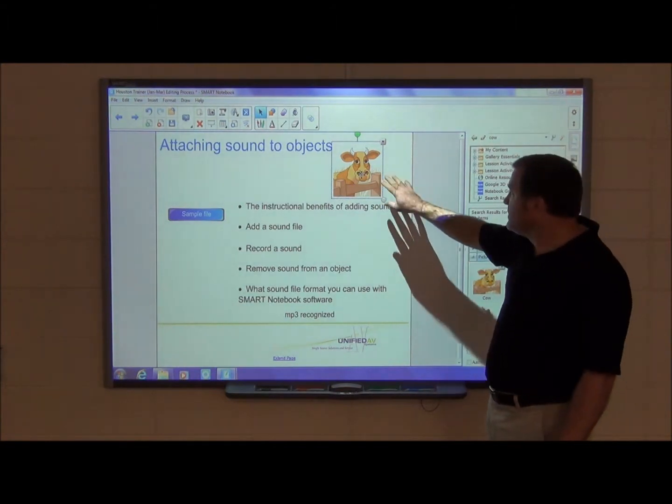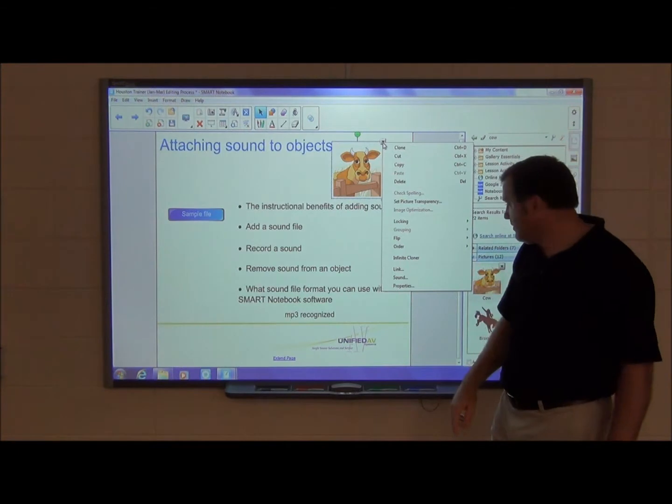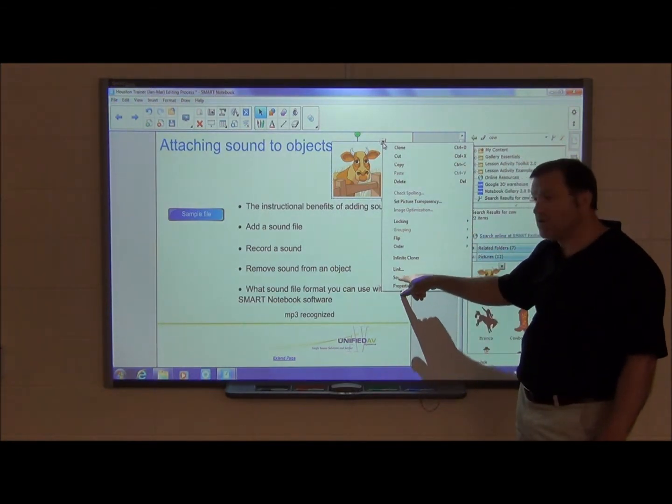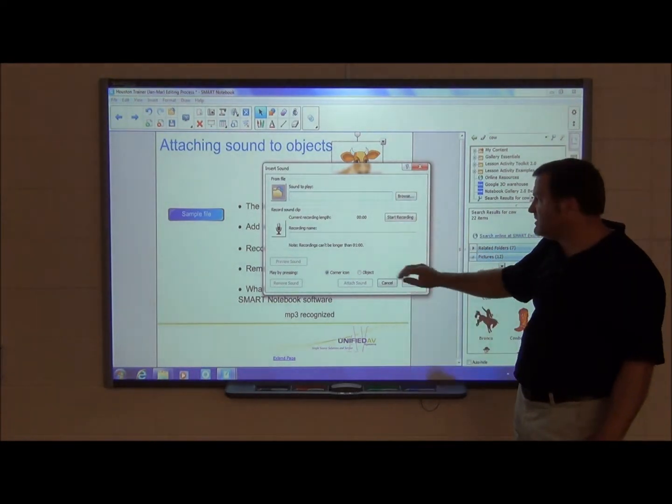So right now I have an object and it's just a picture of a cow. I'm going to hit the drop down arrow here and you'll see at the very bottom above properties the word sound and this insert sound message box comes up.